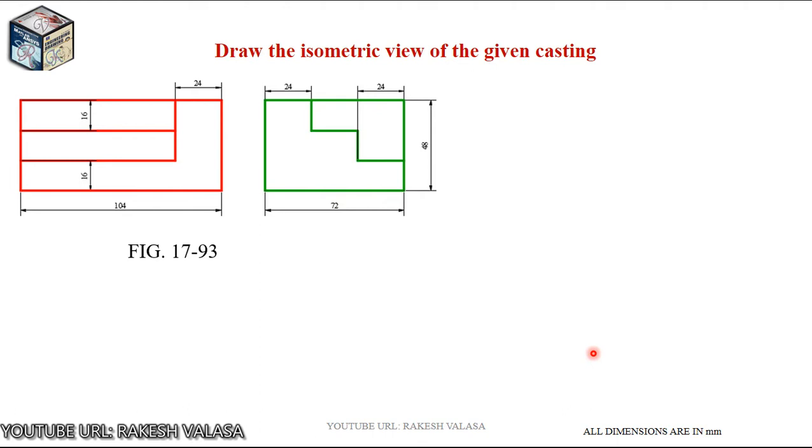First, we need to construct one cuboid with the given dimensions like total length that is 104, total width 72 mm, total height 48. By using these three dimensions that means length, width and height, we need to construct one cuboid. First, draw one horizontal line.